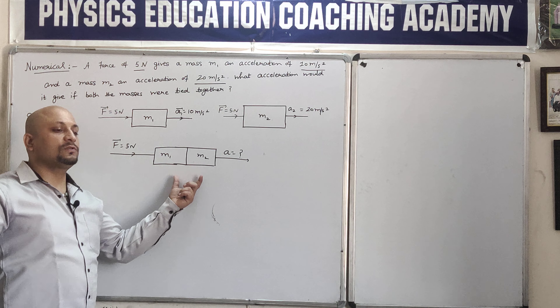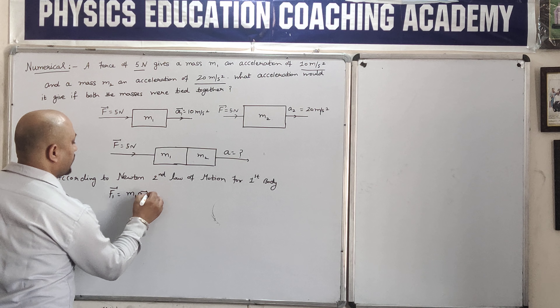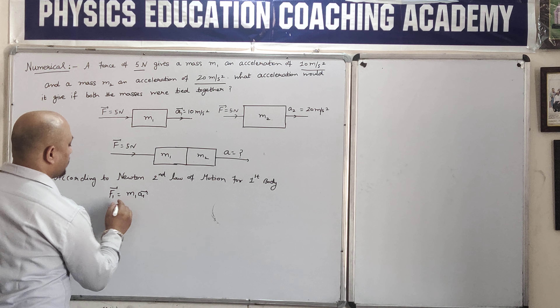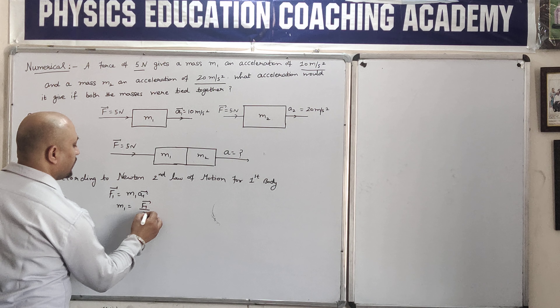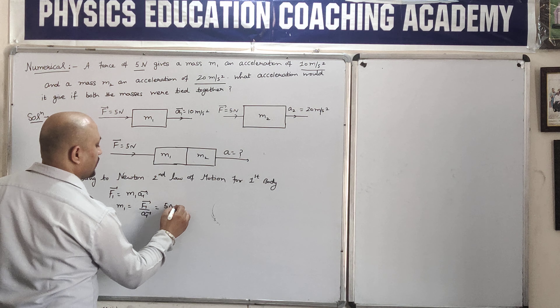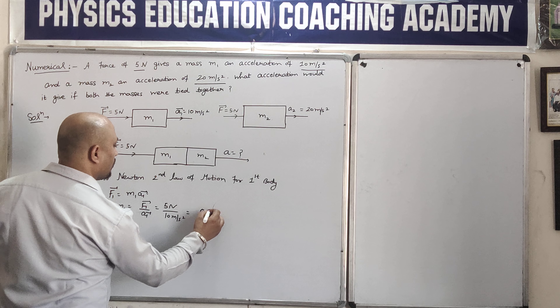According to Newton's Second Law of Motion, we apply it to the first body. For the first body: F1 = M1 × A1. So what is F1? That is 5 Newton. What is A1? That is 10 meters per second square. Therefore M1 = F1/A1 = 5/10, which gives M1 = 0.5 kg.